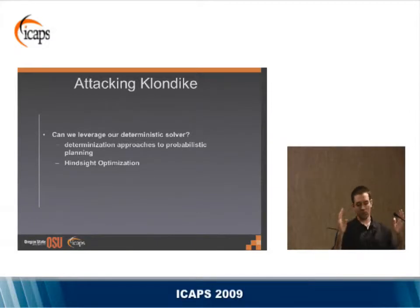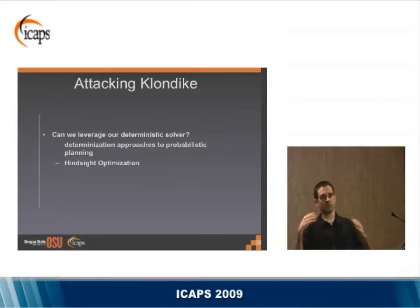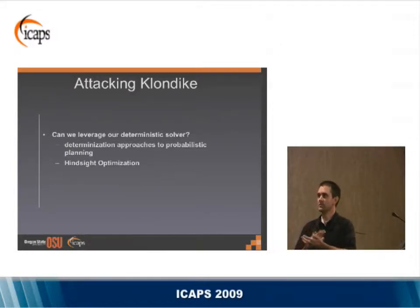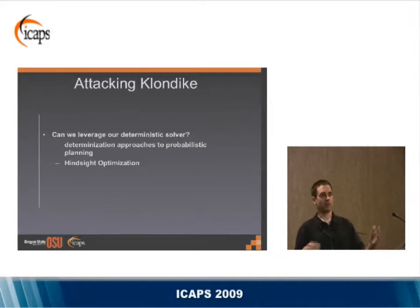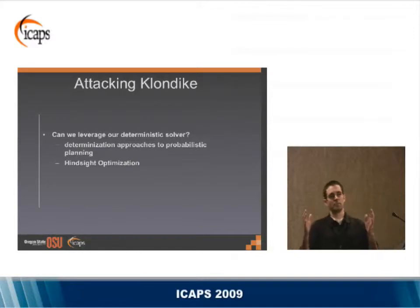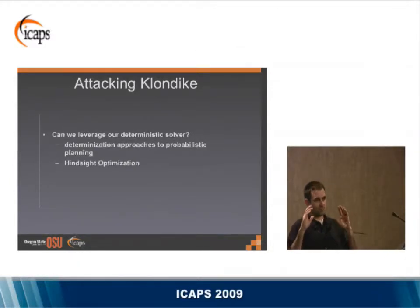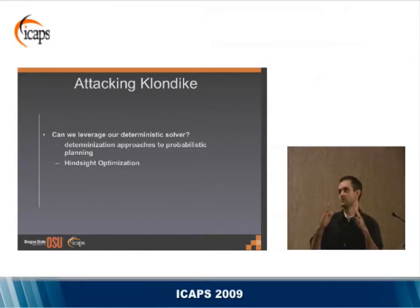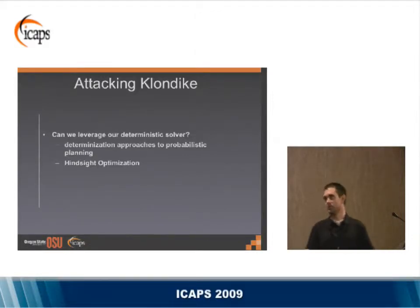So where did we go? Our first thought was to leverage our strong deterministic solver. It turns out there's an entire family of planning algorithms that depend on deterministic solvers via determinization: you fix all probabilistic transitions beforehand, turn the problem into a deterministic one, and solve it with your deterministic solver. Hindsight optimization was the approach we planned to try.